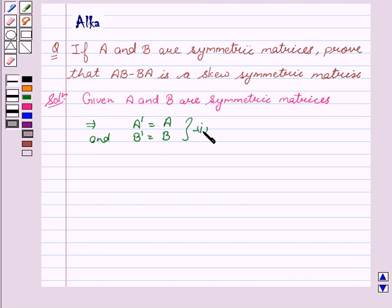Since we have to prove that AB minus BA is a skew symmetric matrix, therefore AB minus BA transpose equal to AB transpose minus BA transpose, which is equal to B transpose A transpose minus A transpose B transpose.